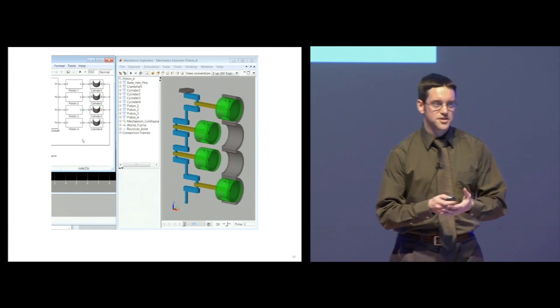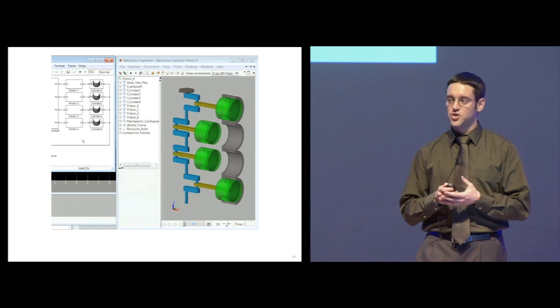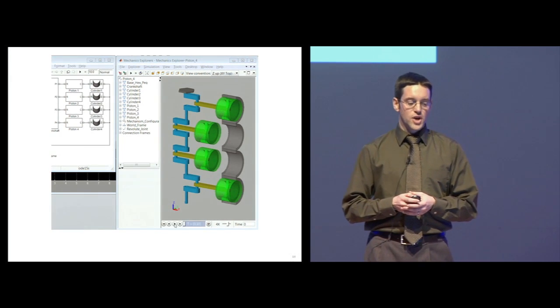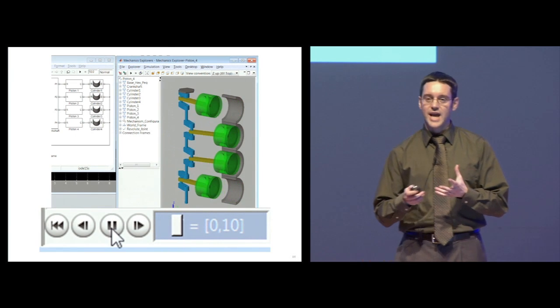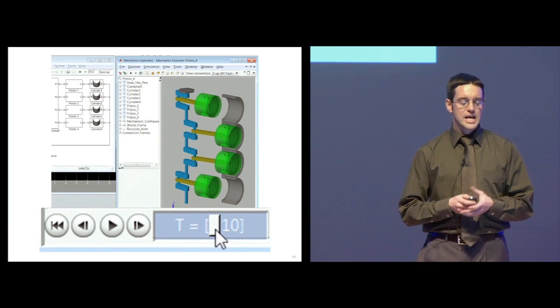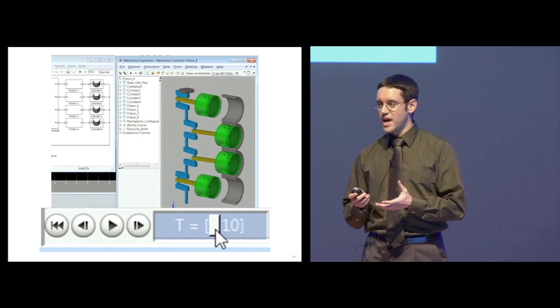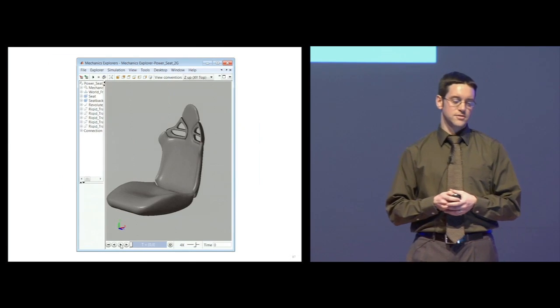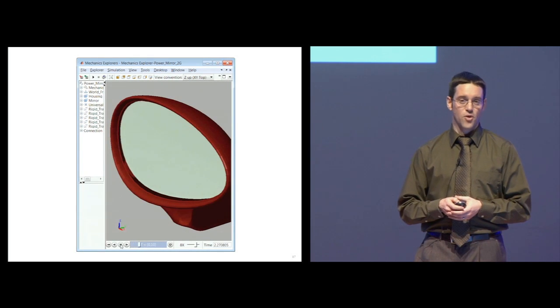When you run the simulation, a three-dimensional animation is created automatically, and you can review and replay and analyze this animation without re-running the simulation. These capabilities enable you to add 3D mechanisms to your system-level model, such as power seats and power mirrors.